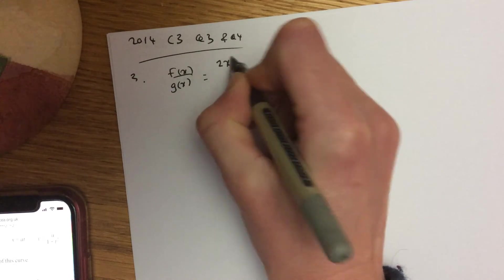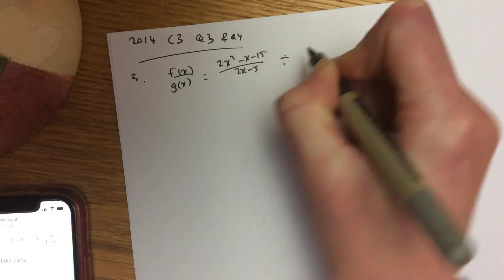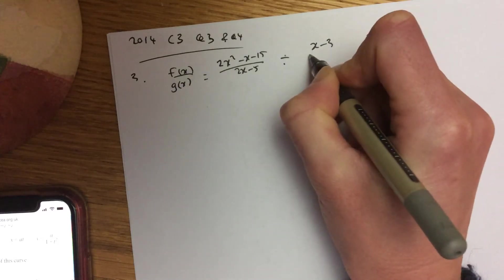So take your fx, which is this one here, and you're dividing it by your gx. Note the way I've laid that out.